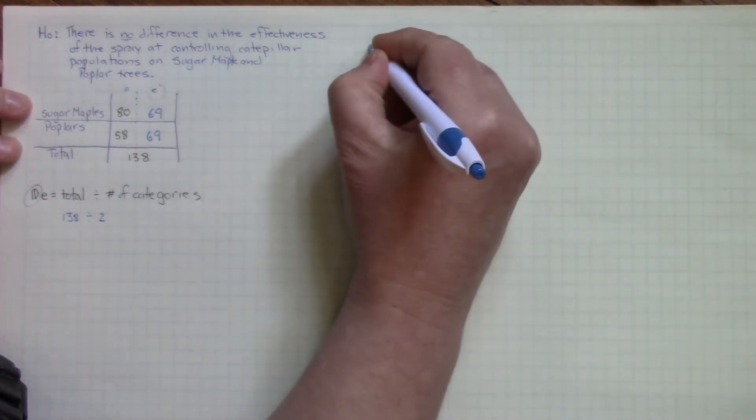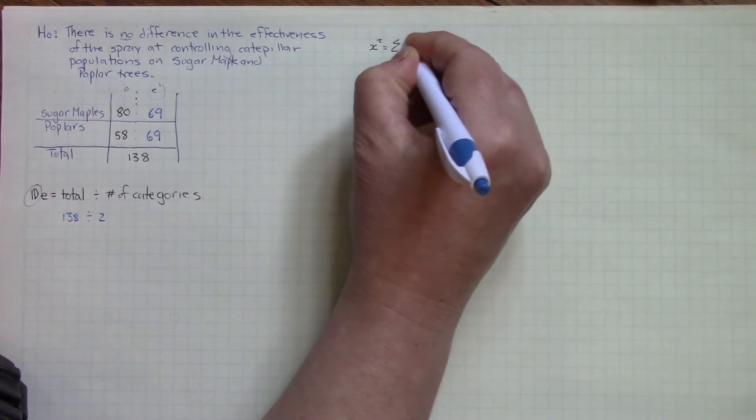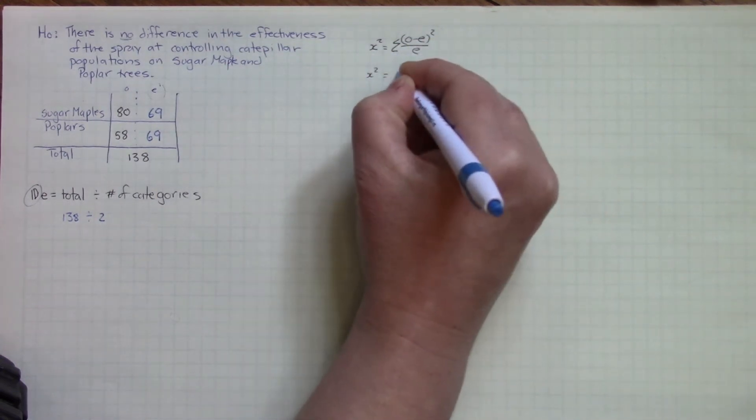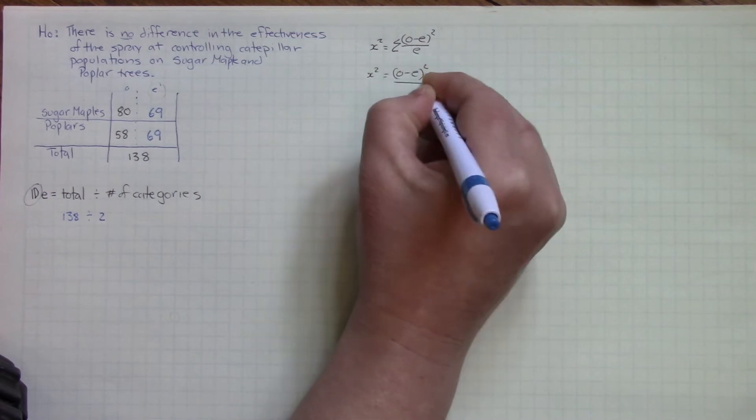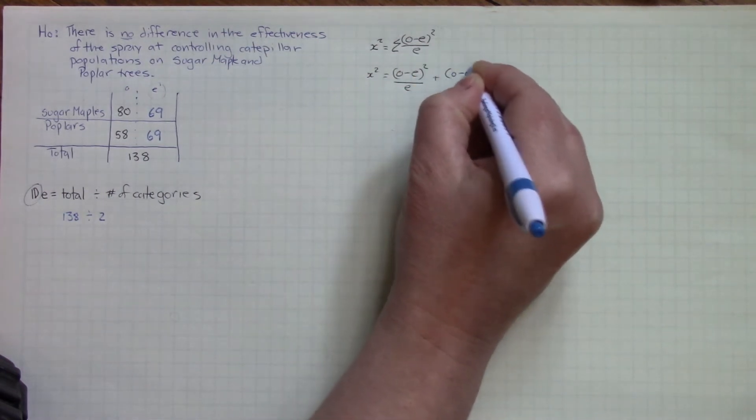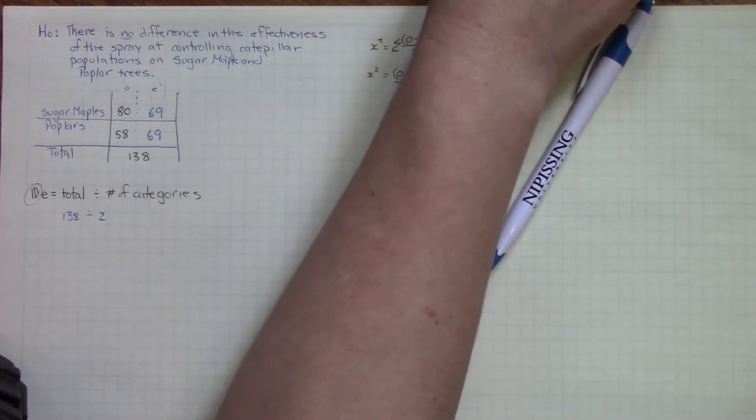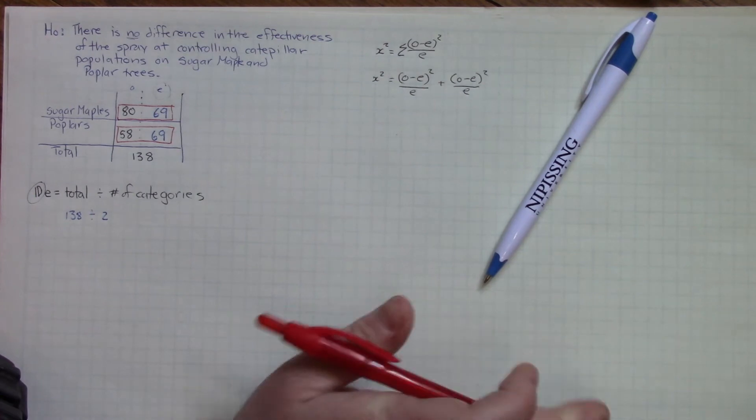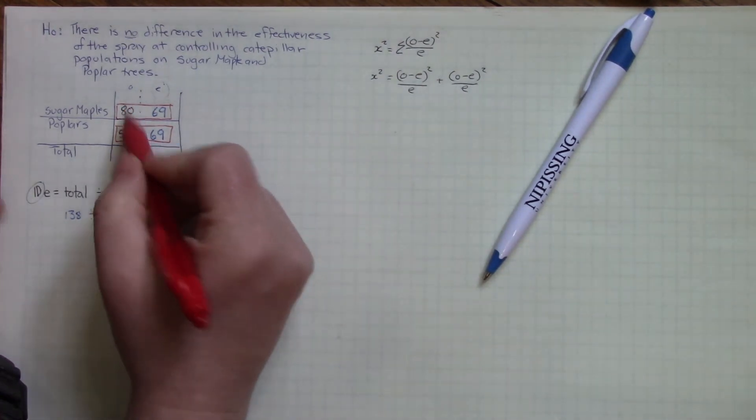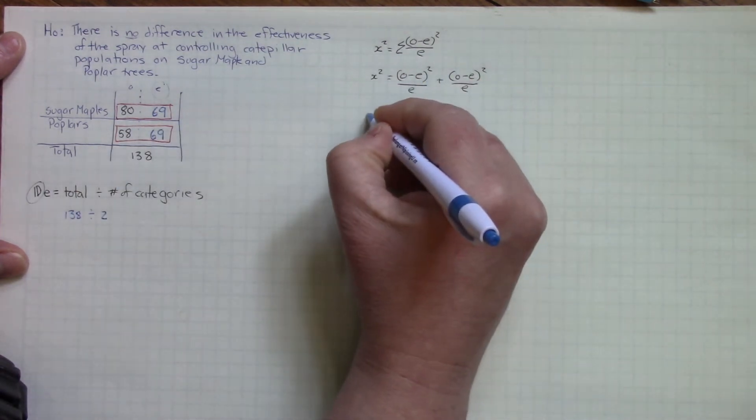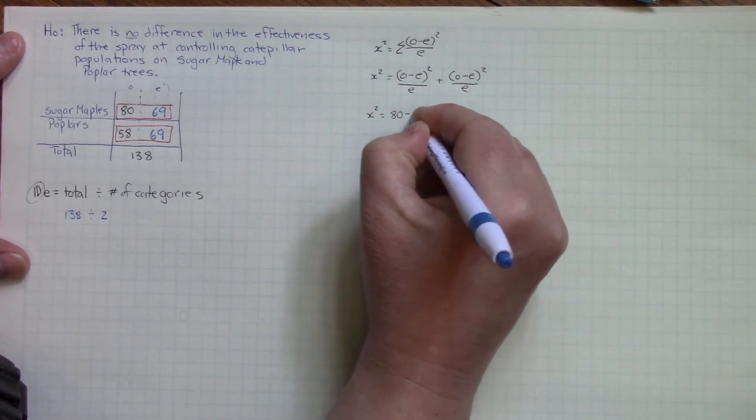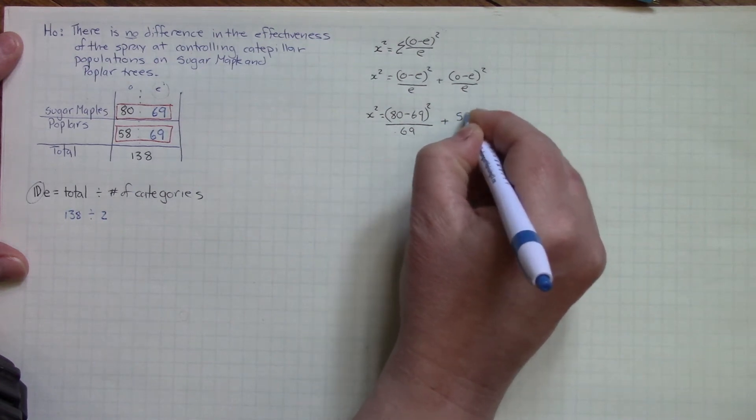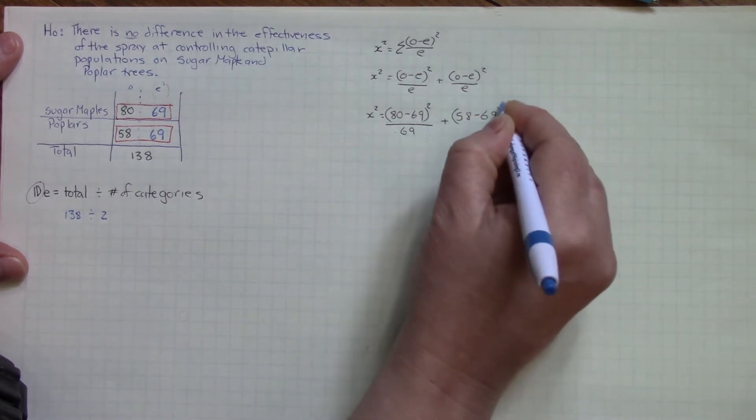So we're going to take that and put it into our chi-squared equation. The sum of means we're going to take this part and add it to itself. How many times do we add it to itself? We look for pairs. We have two variables, two sets of numbers, so we're adding this together twice. 80 minus 69 over 69, 58 minus 69 over 69.